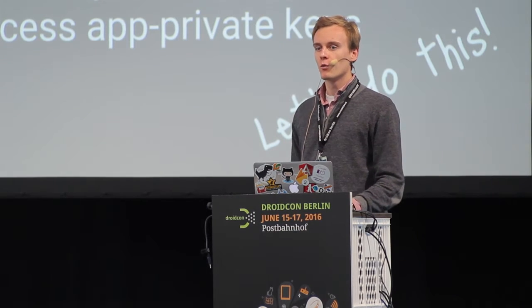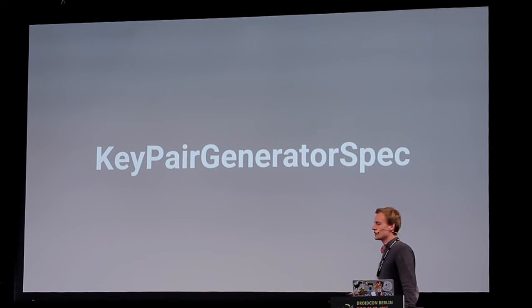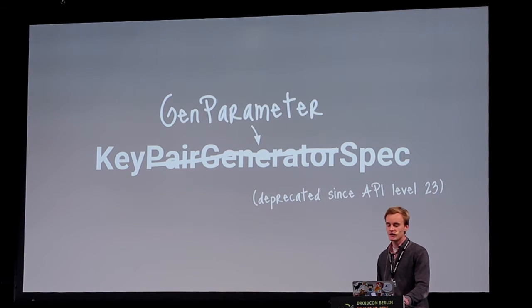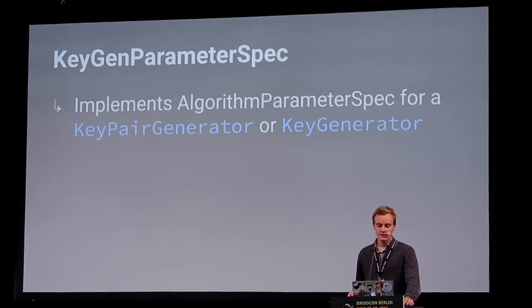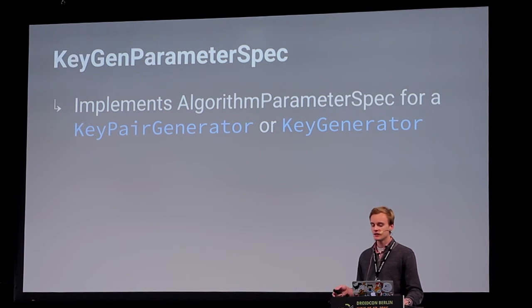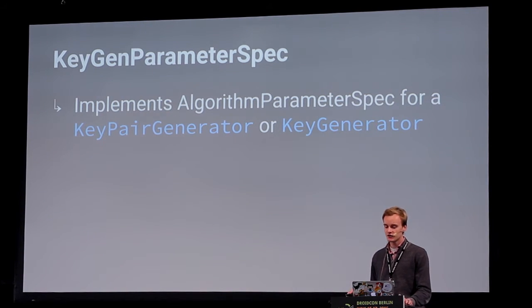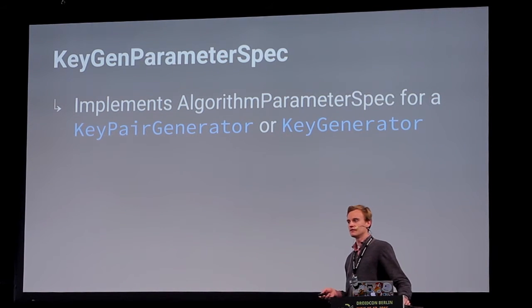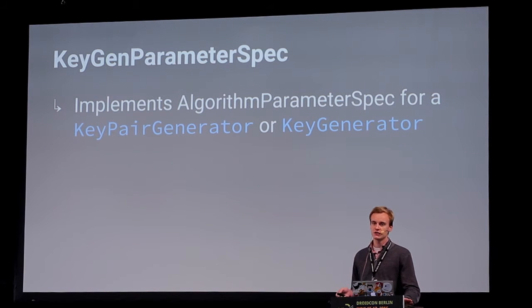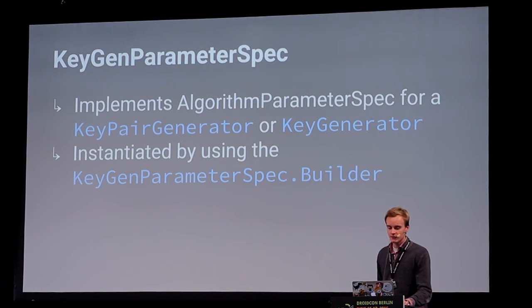If you've already worked with the KeyStore API, you may know the KeyPairGeneratorSpec class — you can forget about it because it's deprecated since API level 23. It's now called the KeyGenParameterSpec class, which implements the algorithm parameter spec for the KeyPairGenerator or KeyGenerator. The KeyPairGenerator and KeyGenerator are engine classes capable of generating private and public key material using the algorithm they were initialized with. Everything is instantiated by the KeyGenParameterSpec.Builder.